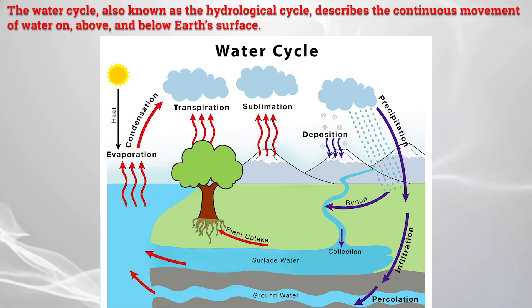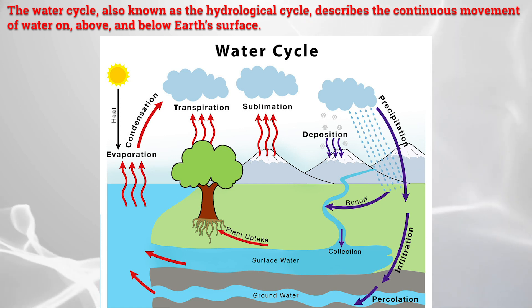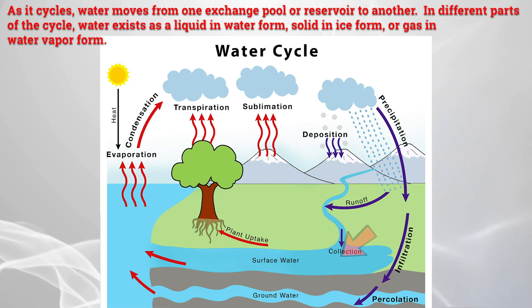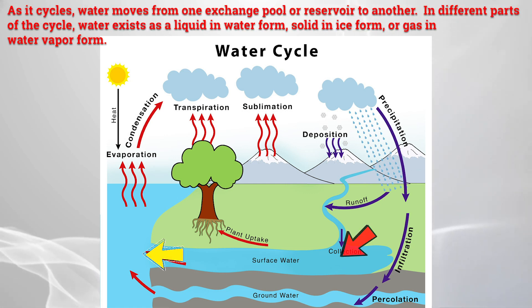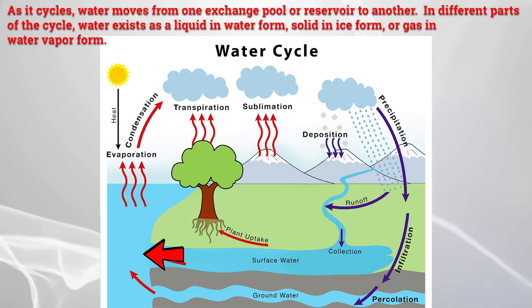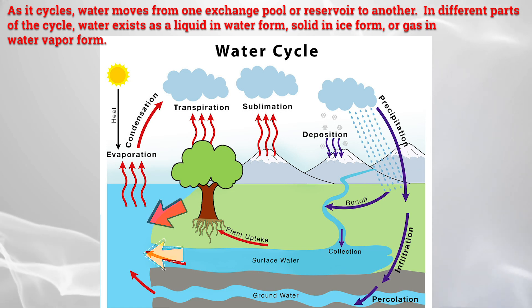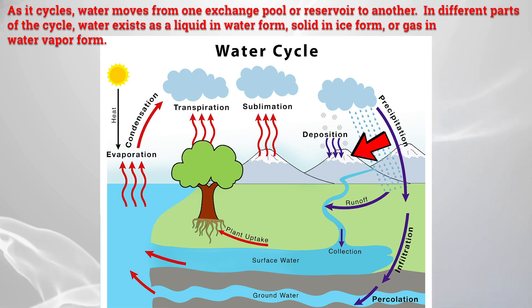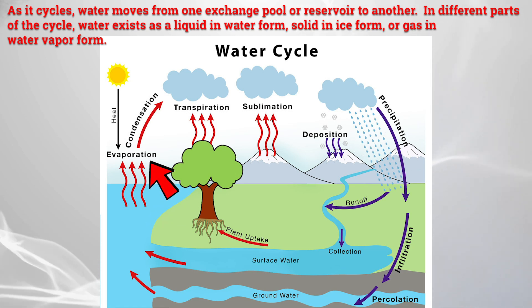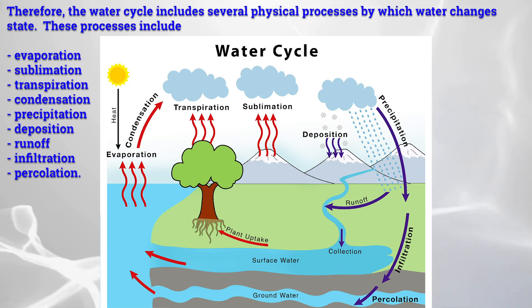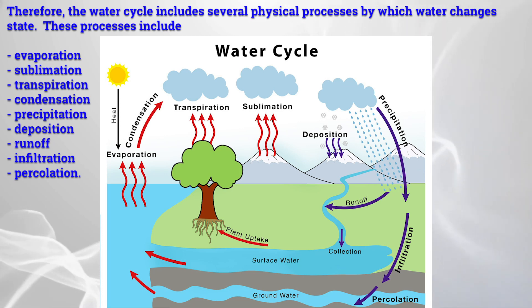The water cycle, also known as the hydrological cycle, describes the continuous movement of water on, above, and below Earth's surface. As it cycles, water moves from one exchange pool or reservoir to another. In different parts of the cycle, water exists as a liquid in water form, solid in ice form, or gas in water vapor form. Therefore, the water cycle includes several physical processes by which water changes states.